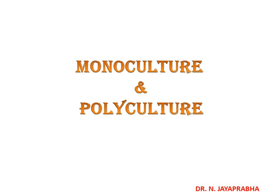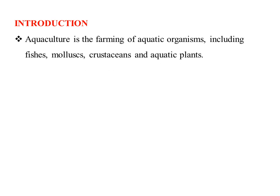We are going to discuss monoculture and polyculture. First, we have to know what aquaculture is. Aquaculture is the farming of aquatic organisms, which includes fishes, molluscs, crustaceans, and even aquatic plants. Farming means some sort of intervention involved in the rearing process for the enhancement of production, like regular stocking, feeding, and protection from predators. It also implies individual or corporate ownership of the stocks being cultivated.